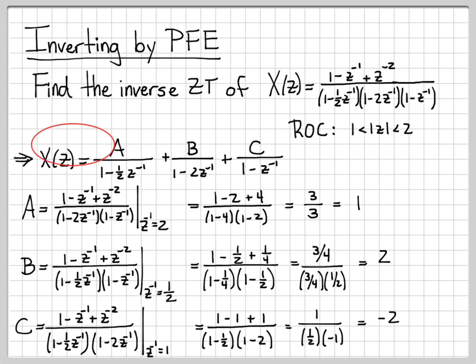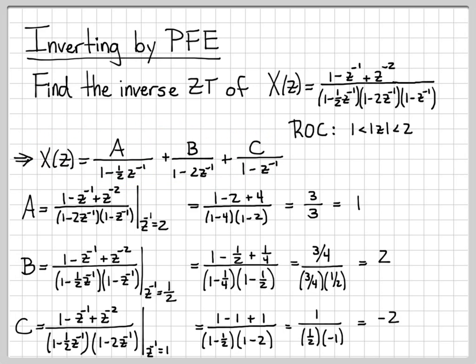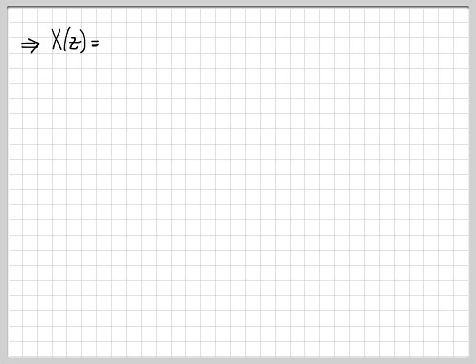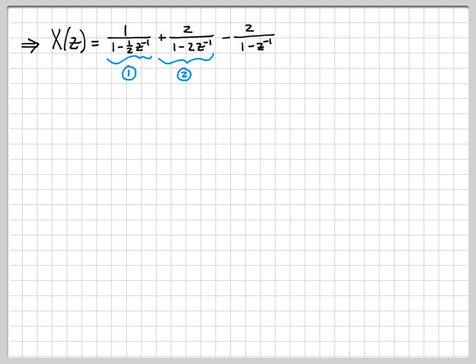We now know how to decompose X(z) into simple first-order terms. From the previous calculations, a = 1, b = 2, and c = negative 2. We're ready to tackle the inverse. I'll think of X(z) as three terms. The region of convergence is the magnitude of z greater than 1 but less than 2.